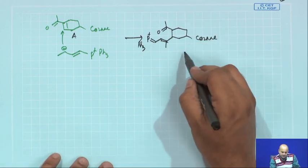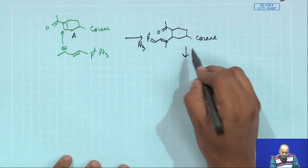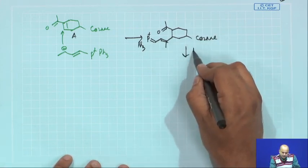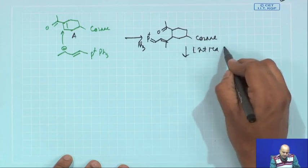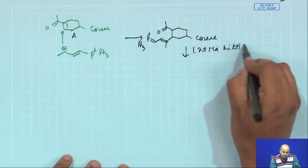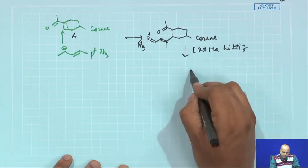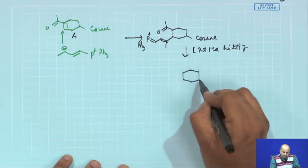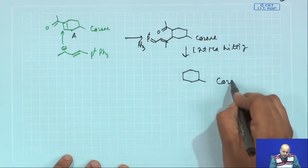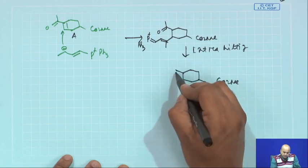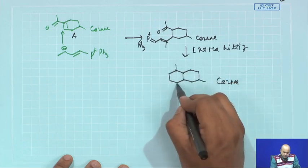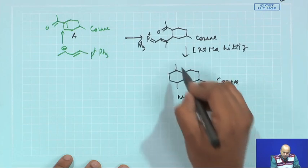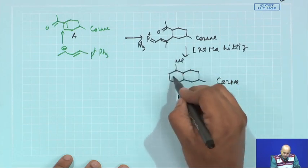This VTIC ylide can easily undergo an intramolecular VTIC reaction, which will essentially give you a cyclic product. The structure of the cyclic product will contain this methyl group.